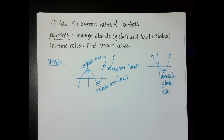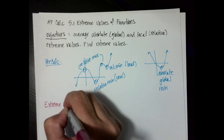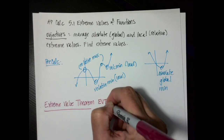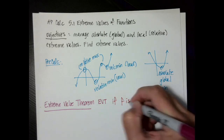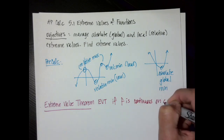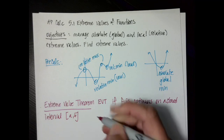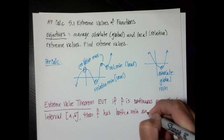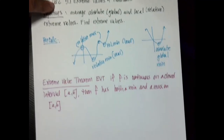So we've talked about our vocabulary words: absolute or global, and local or relative. Now let's talk about a calculus theorem — it is called the Extreme Value Theorem, with initials EVT. This is something you'll want to add to your formula sheet. It says: if F is continuous on a closed interval [A, B], then F has both a minimum and a maximum on that closed interval. The Extreme Value Theorem is also an existence theorem.